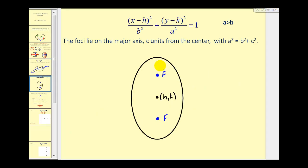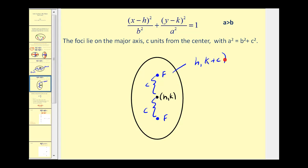However, if we have a vertical major axis, we add or subtract c from the y coordinate of the center to determine the two foci. So the foci would be h comma k plus c, and h comma k minus c.